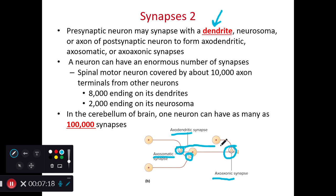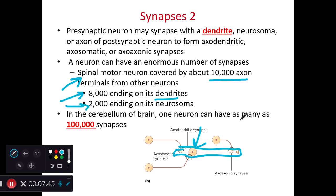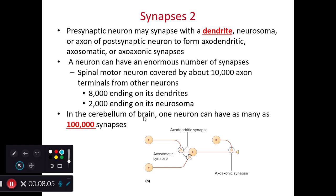In essence, one postsynaptic neuron could be completely covered in synapses. For example, a spinal motor neuron can have about 10,000 axon terminals from other neurons — meaning one neuron in our spinal cord can interact with up to 10,000 other neurons. Most of those interactions occur on the dendrites, with a smaller number on the neurosoma and very few on the axon itself. In the cerebellum, where neurons are typically smaller, one neuron can have as many as 100,000 synapses, which is mind-boggling in terms of processing density.